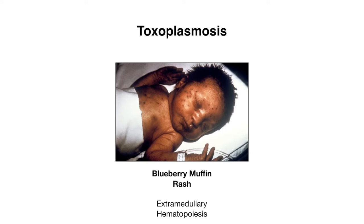Babies can also have a blueberry muffin rash, which actually represents extramedullary hematopoiesis — where hematopoiesis occurs outside of the bone marrow. Given that these babies can already have jaundice, you might find this rash overlaid on top of skin that appears jaundiced.